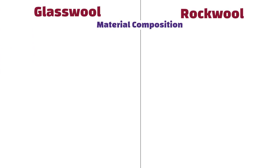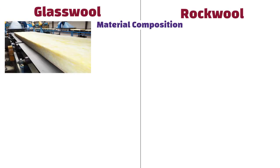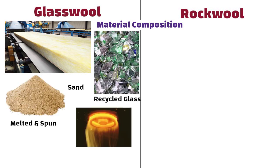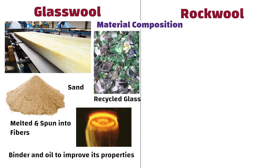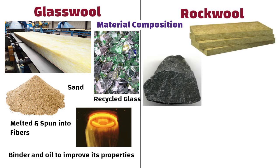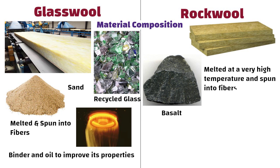Material Composition: Glass wool is made primarily from recycled glass and sand, which are melted and spun into fibers. It may also contain some binder and oil to improve its properties. On the other hand, rock wool is made from volcanic rock, typically basalt, that is melted at a very high temperature and spun into fibers. It also contains binders to hold it together.